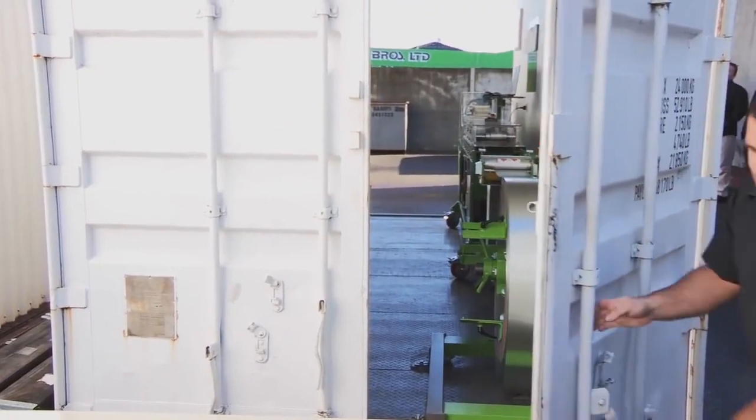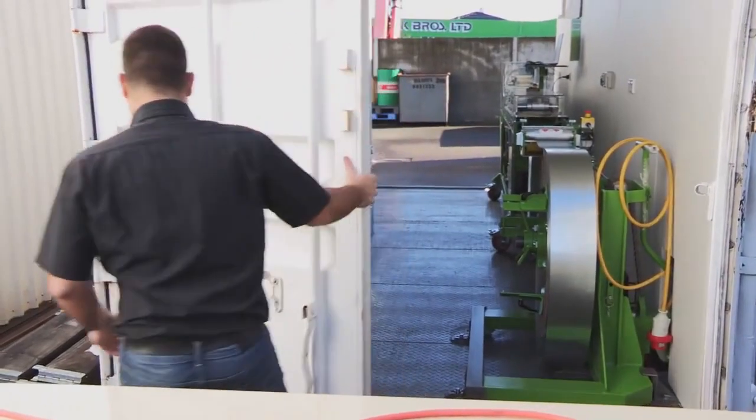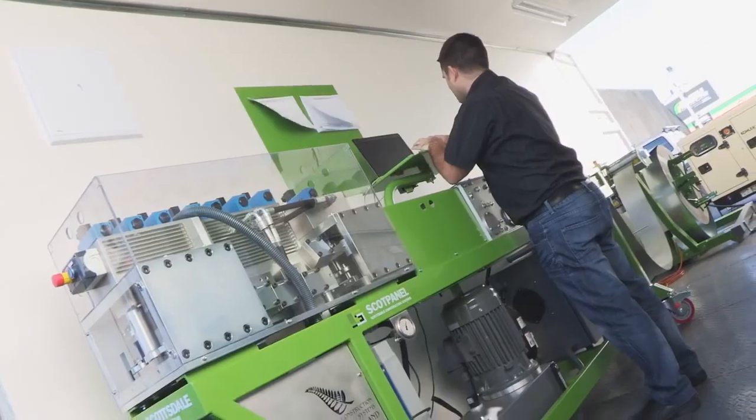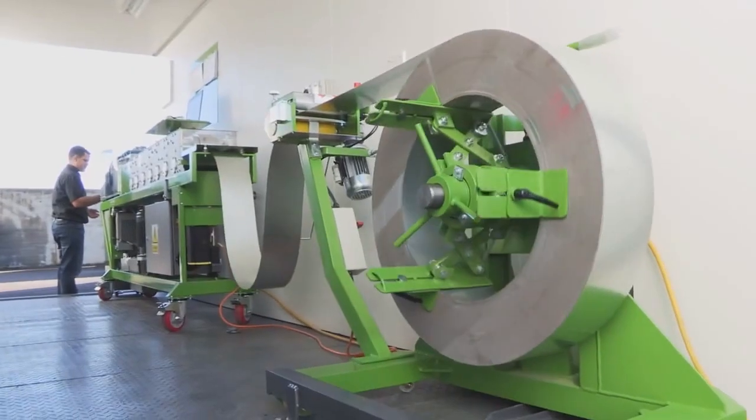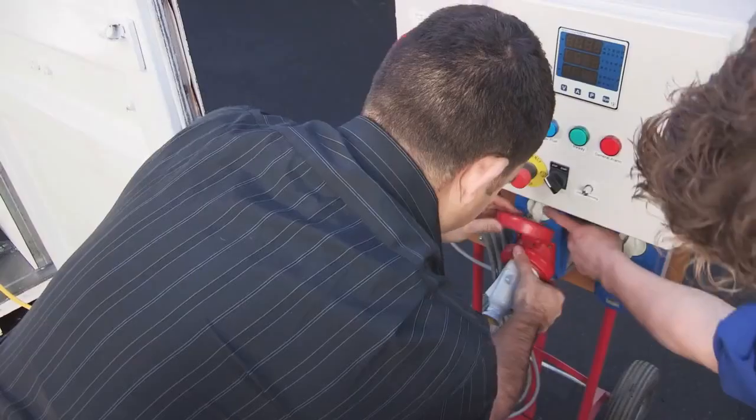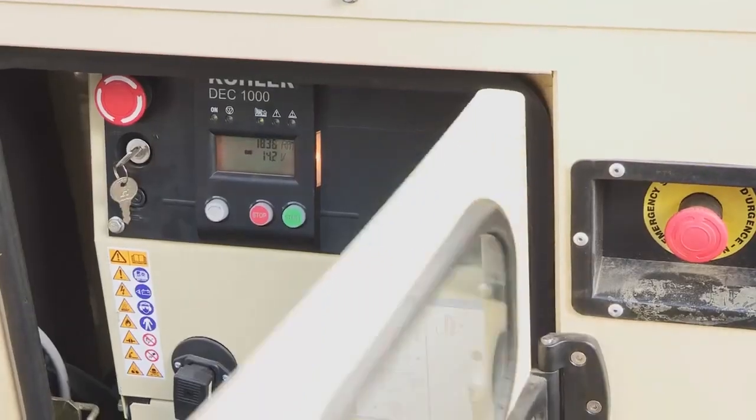Scottsdale can supply a fully fitted out containerized factory with lifting arm to load coils and enable fabrication of frames and trusses on site in a 20 foot shipping container. The panelized and truss systems are both well suited to containerized factories for on-site deployment.